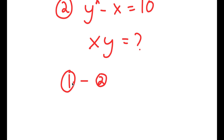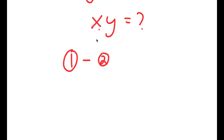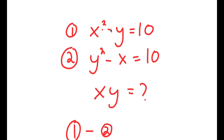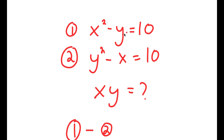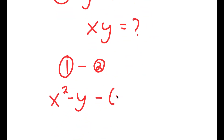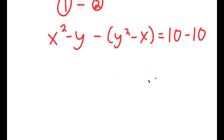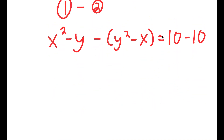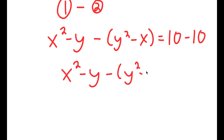I'm going to find equation 1 minus equation 2. Equation 1 is x squared minus y equals 10, so I have x squared minus y minus (y squared minus x) equals 10 minus 10. Since 10 minus 10 is 0, I get x squared minus y minus y squared minus x equals 0.